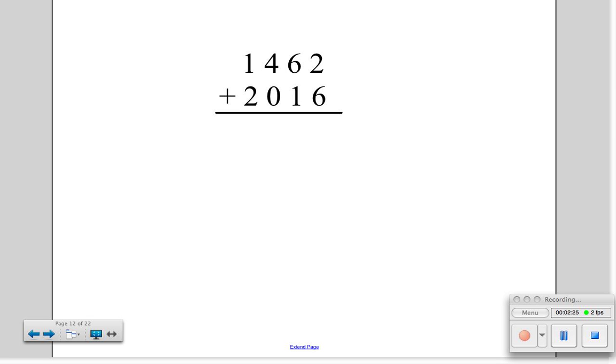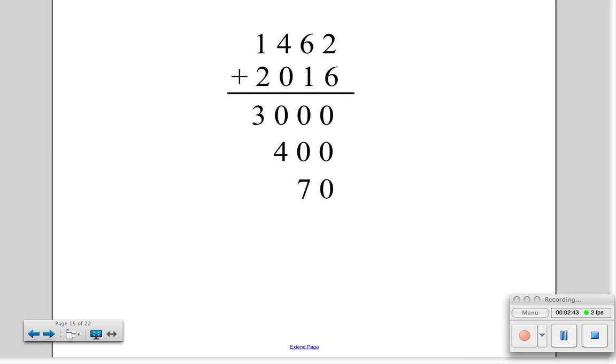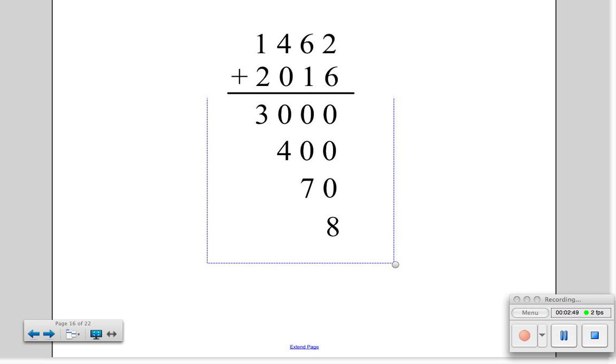Let's try a harder problem: 1,462 plus 2,016. First, we add 1,000 plus 2,000, which is 3,000. Then, we add 400 plus 0, which is 400. Next, we add our tens column, 60 plus 10, which is 70.